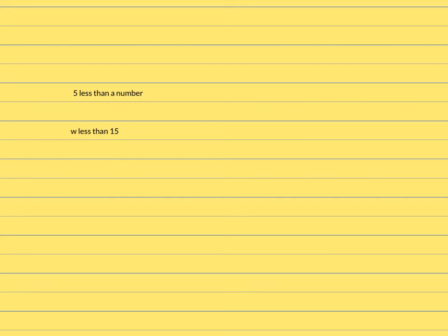These ones are a little bit different. This one has the word less than, which is a switch word — so we're going to switch the order. Think about it: five less than a number. If our number was six, you'd have six and then take five away — six minus five. So if our number is our variable, we do x minus five. See how we switch the order? Even though the five comes first, because of the switch word less than, it switches the order. Go ahead and try the next one, then pause the video and come back and check it.